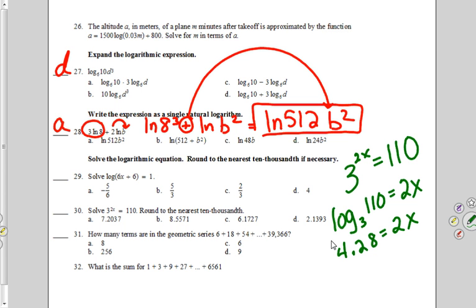If 2x equals 4.28, we divide both sides by 2 and get 2.14. So the answer to 30 is D is the best choice.